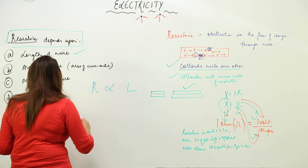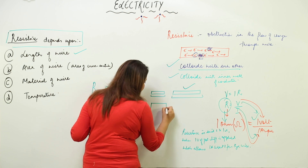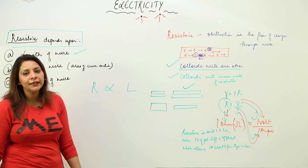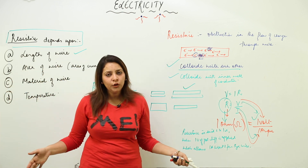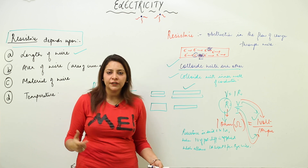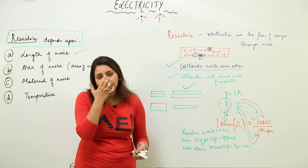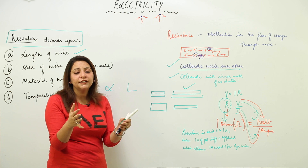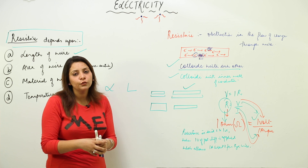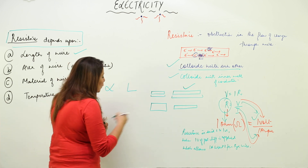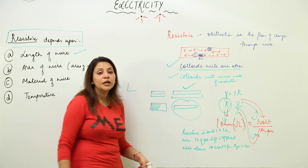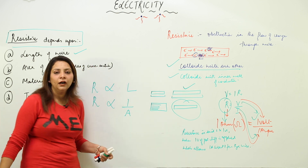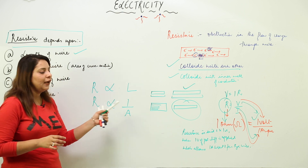For area of cross-section, consider a thick wire versus a thin wire, like a wide road versus a narrow road. On a narrow road, there are more chances of vehicles colliding. Similarly, electrons move more smoothly through a thick wire than a thin one. Therefore, resistance is inversely proportional to area — more area means less resistance, and less area means more resistance.